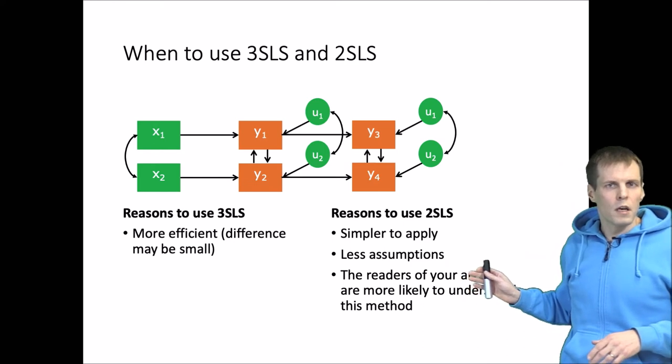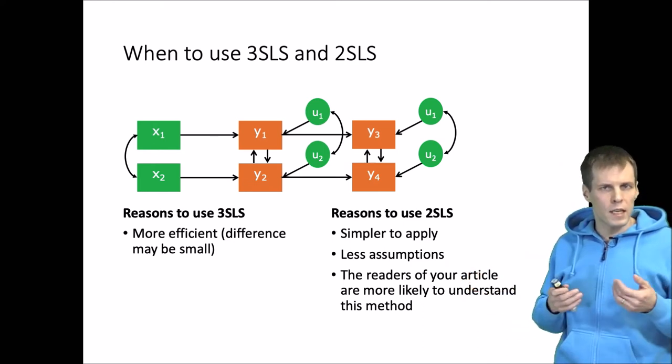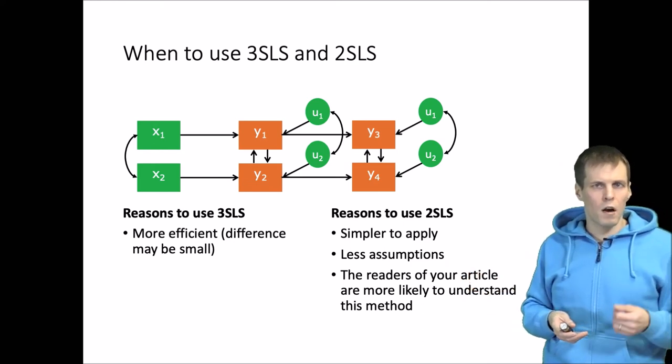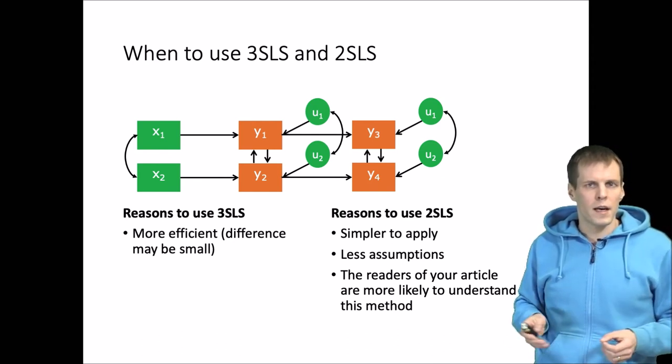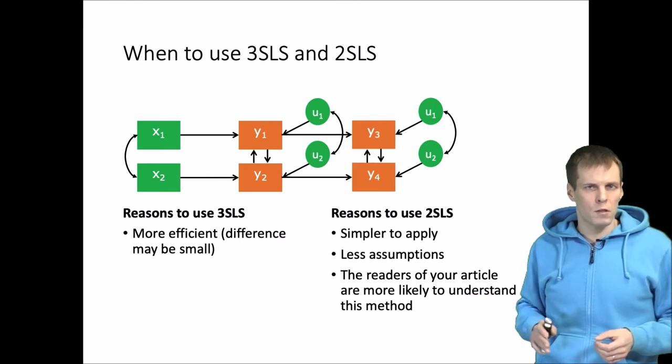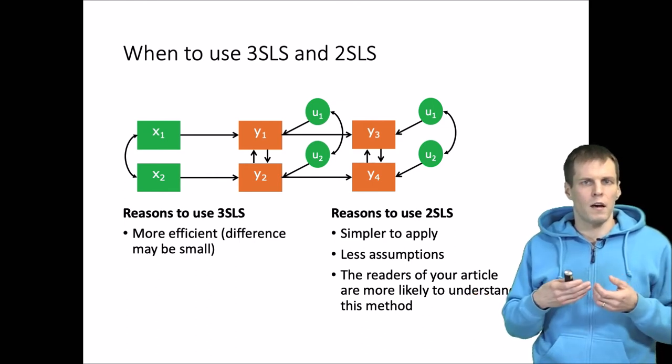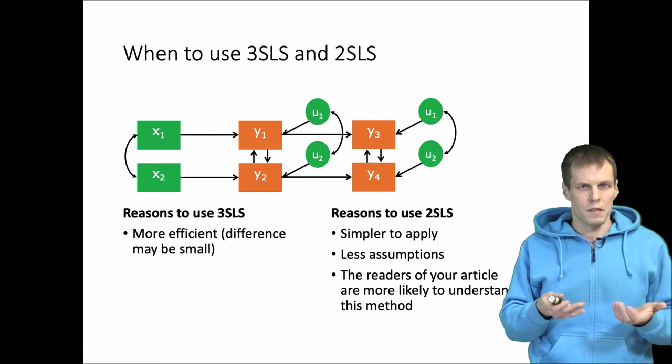For two-stage least squares, it should be used because it's simpler to apply. So if your sample size is large enough that you're going to be efficient enough and you have strong instruments, then using two-stage least squares is probably a better idea because the added value of the added efficiency is pretty small.